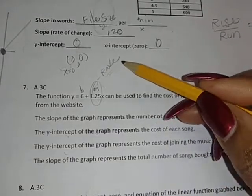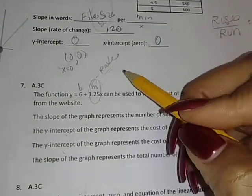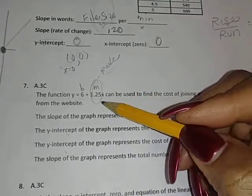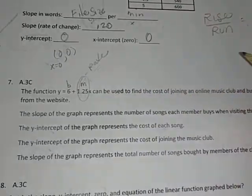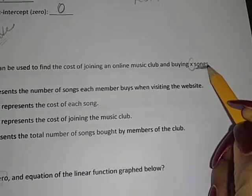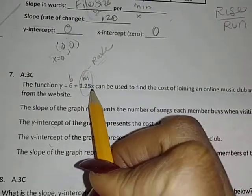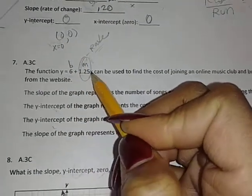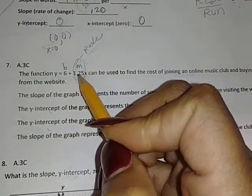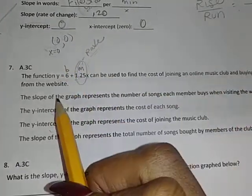The cost—the price—what I'm going to pay for. What am I paying for? Songs. How do I know that? X is songs. What do I see here? X. Oh, so I'm going to pay a dollar and 25 cents for every song. The cost per song is M, the slope.